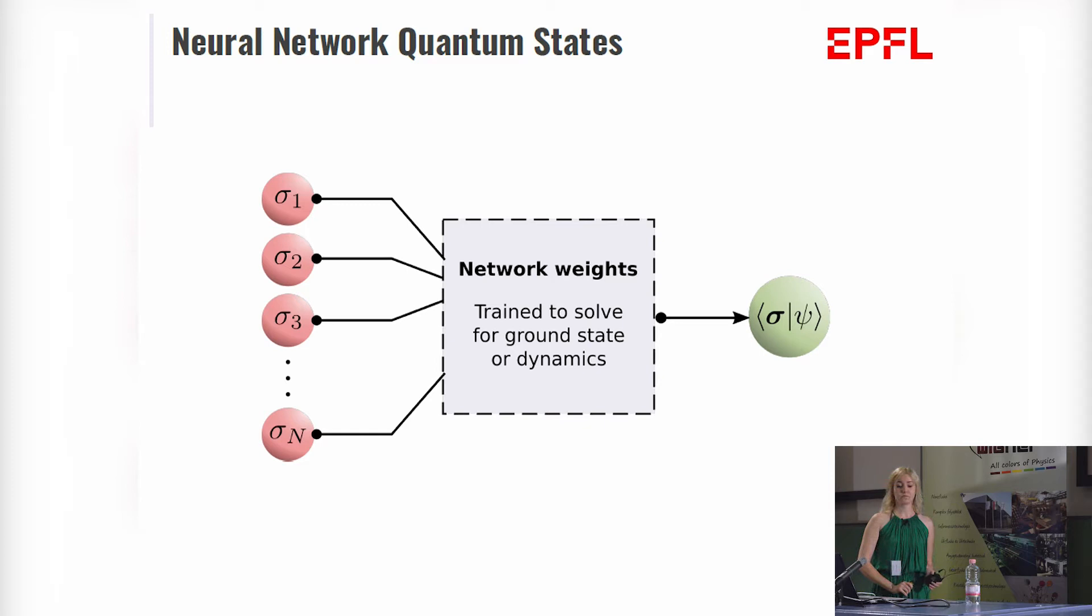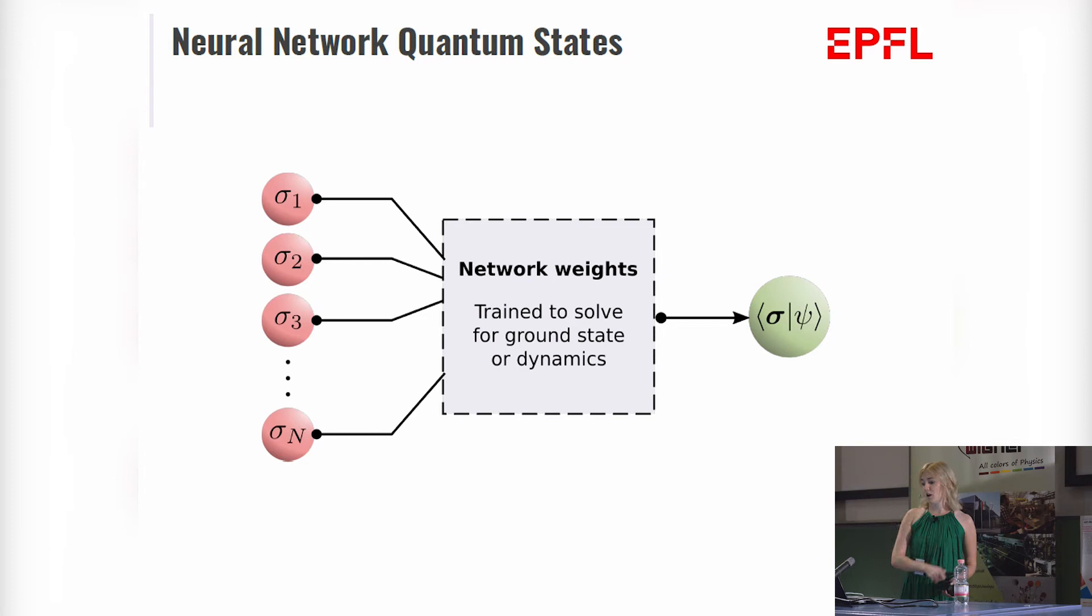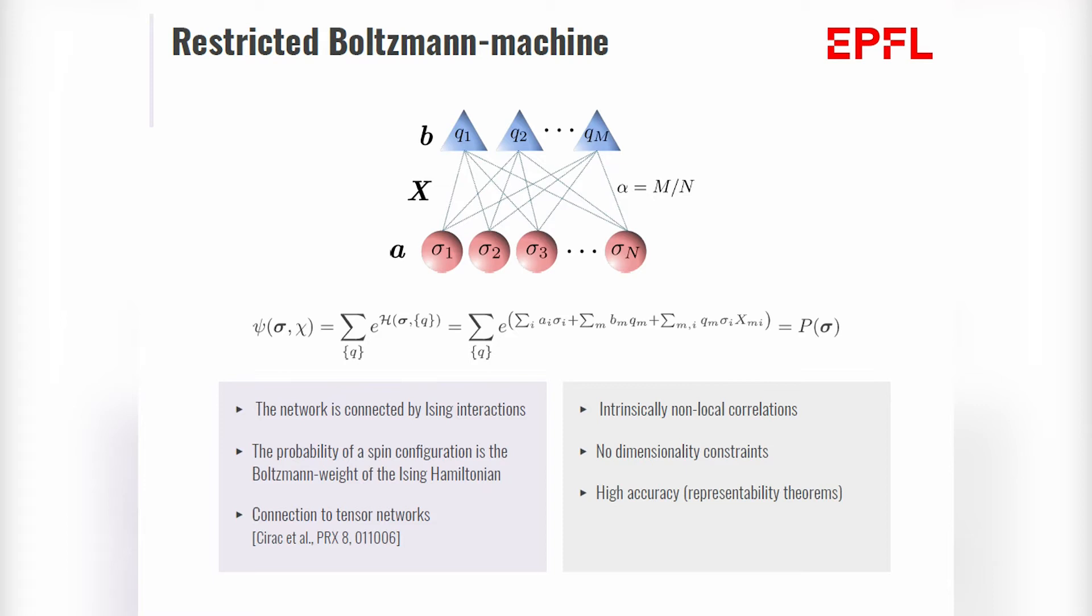but the most promising one with the best result was the so-called restricted Boltzmann machines. RBMs are generative neural networks which are able to learn a distribution over their visible inputs. In quantum physics, our inputs are going to be the spin configurations. Our wave function is described by a complex probability distribution which our network tries to approximate. Each RBM is composed of two binary-valued layers, one for our physical layer, and the hidden layer introduces the correlations. Our whole network is going to be connected through Ising interactions, and the joint probability is nothing else but the Boltzmann weight of this Ising Hamiltonian. Then the marginal probability of a visible spin configuration is given by summing out all the possible hidden spin configurations, and we choose this quantity to describe our wave function.